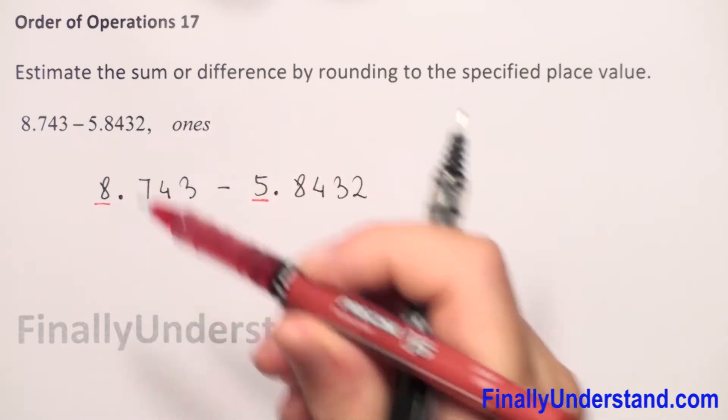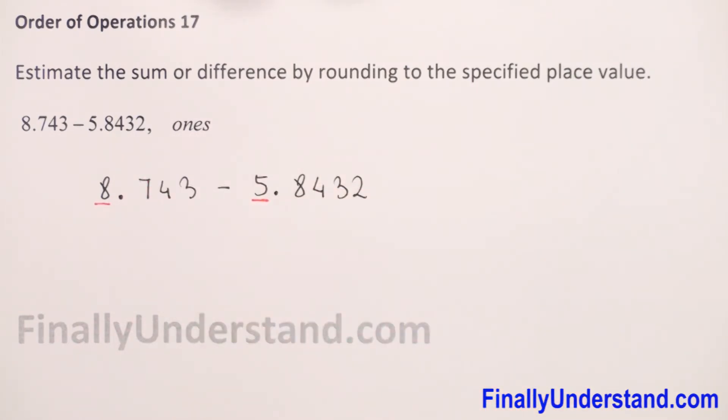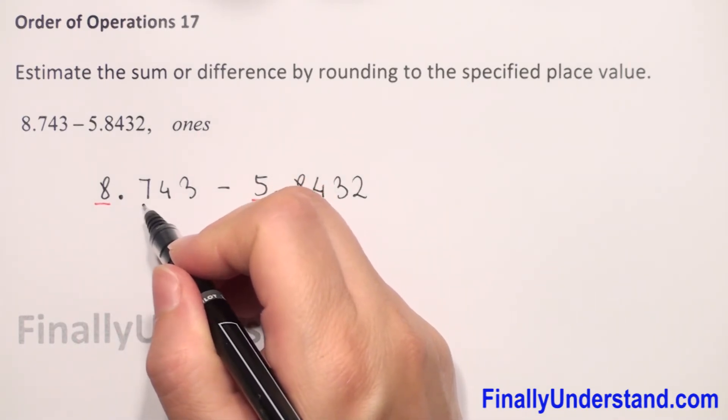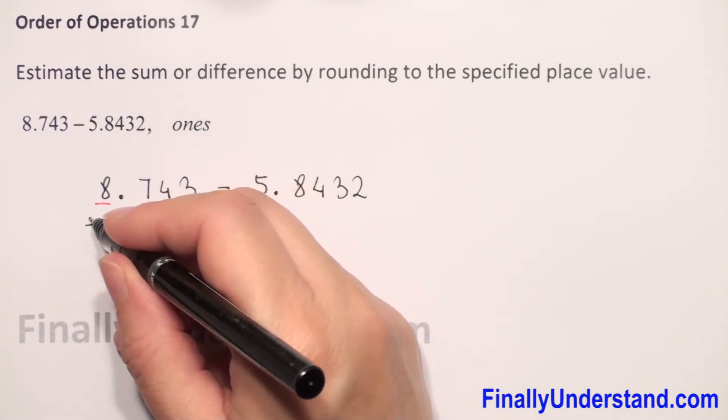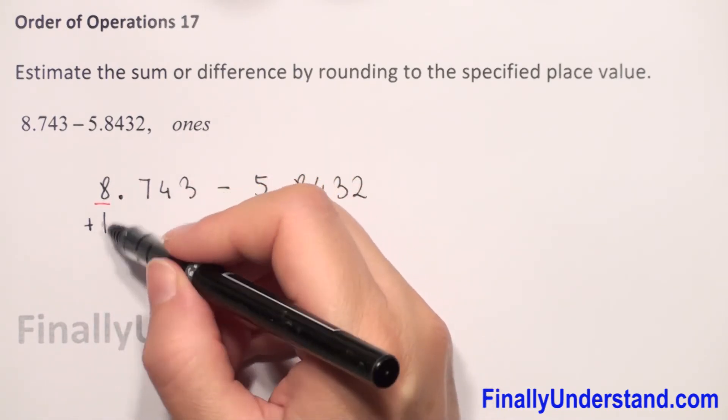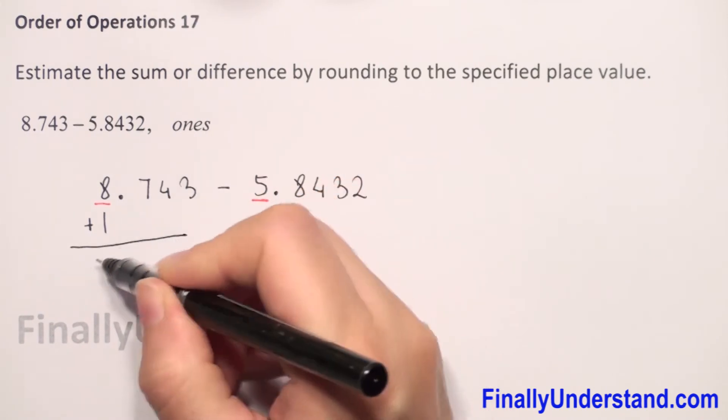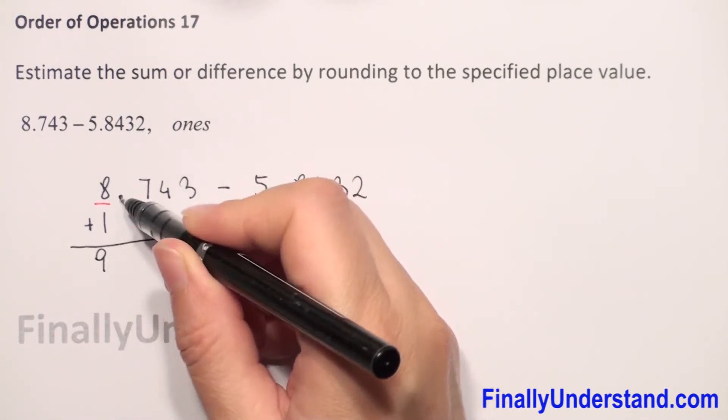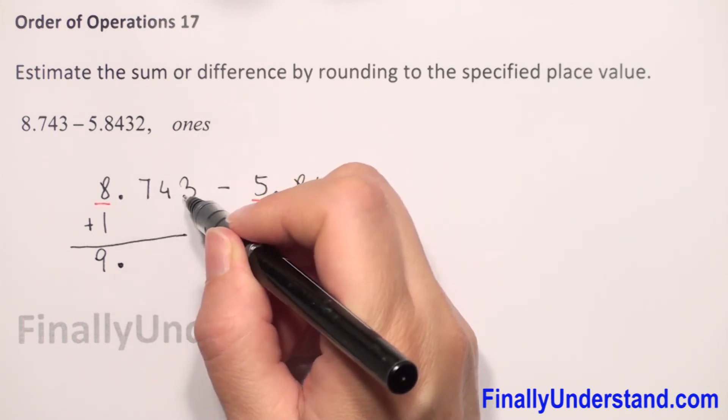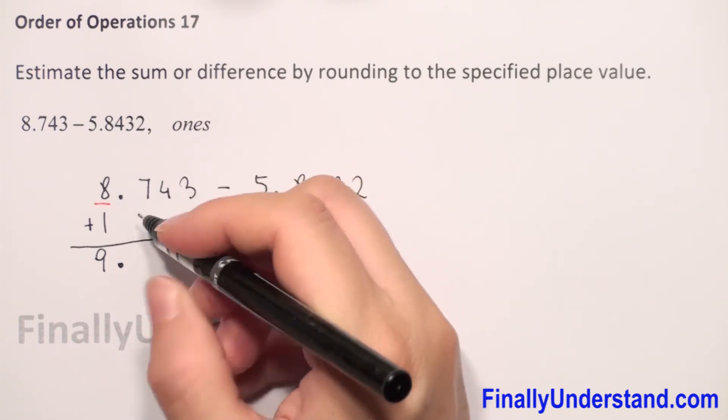We check the digit after our underlined digit, which is 7. When we have a number greater than or equal to 5, we add 1 to our underlined digit. So 8 plus 1 equals 9. We copy the decimal point and change every digit after our underlined digit to zeros.